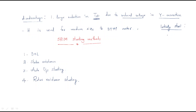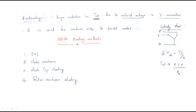In the star connected system with phases R, Y, and B, the applied voltage becomes the phase voltage VL divided by root 3. The phase voltage decreases, which means the starting current — given by the formula Ks × E2 / √(R2² + X2²) — also decreases. So reduced voltage in star connection causes reduced starting current.